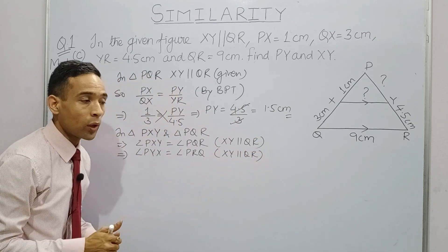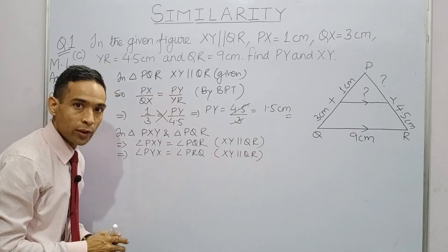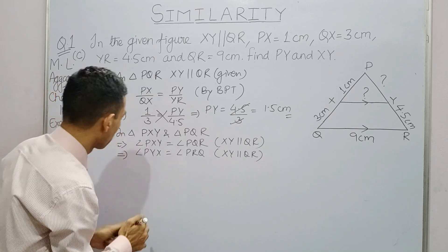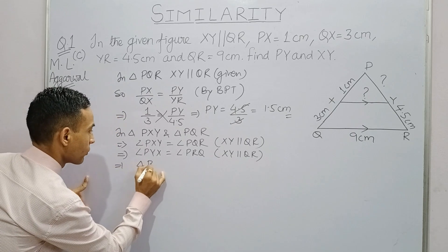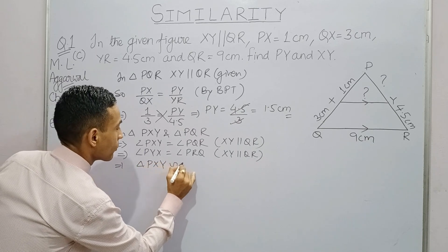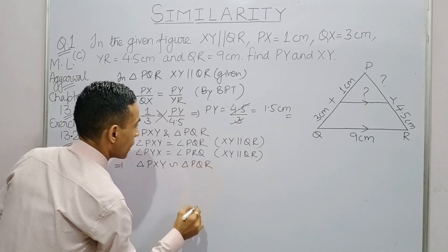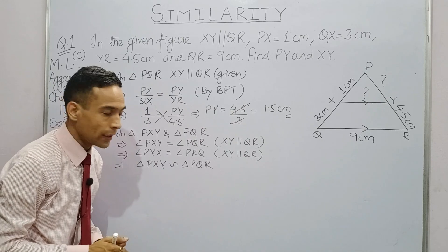XY is parallel to QR, and these two angles are corresponding angles, and corresponding angles are equal.